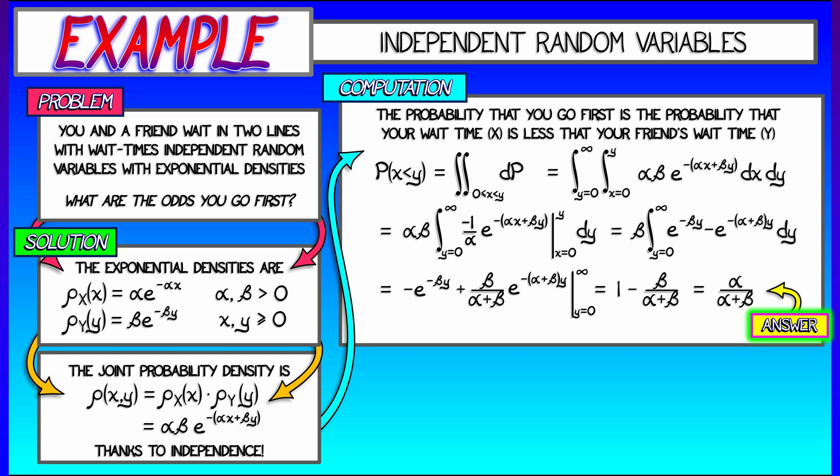Now this makes a lot of sense. This is a number between zero and one, as a probability ought to be. If α and β were exactly the same, that is, if I had the same exact type of line, then the probability that I go first is one half.